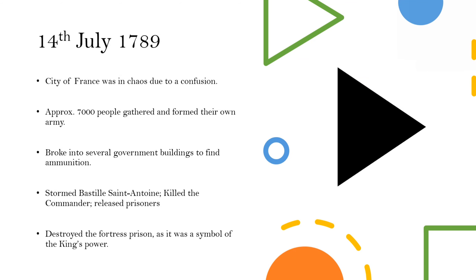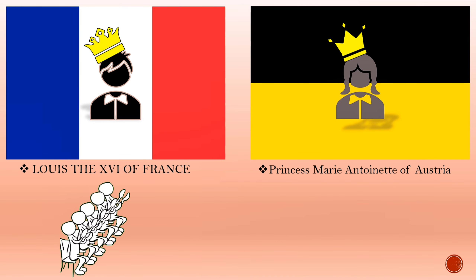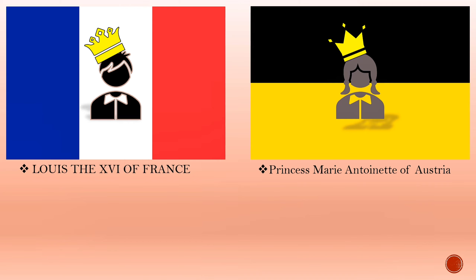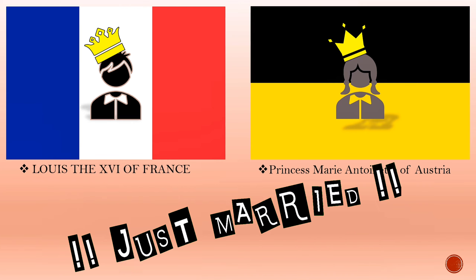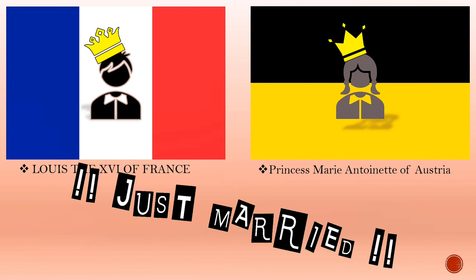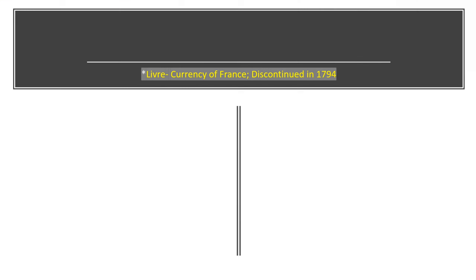Then we looked at the history to understand this outcome. Louis XVI of the Bourbon family was crowned king in 1774 and married Princess Marie Antoinette of Austria. Upon becoming king, he realized that his state was bankrupt.